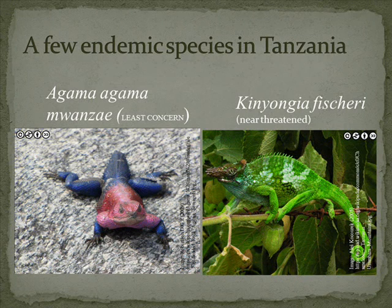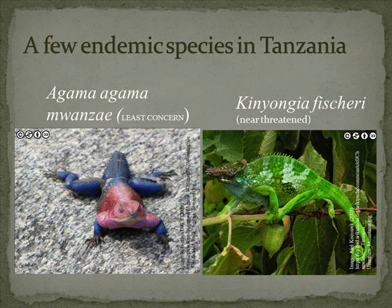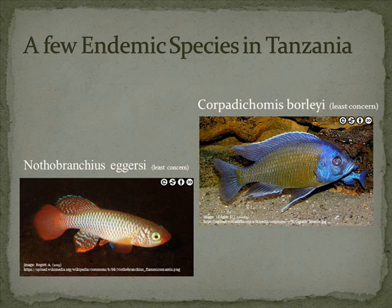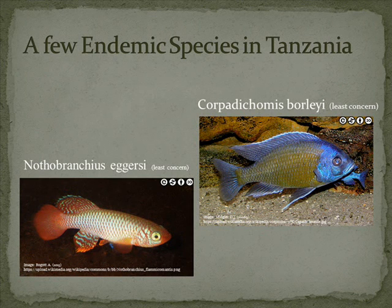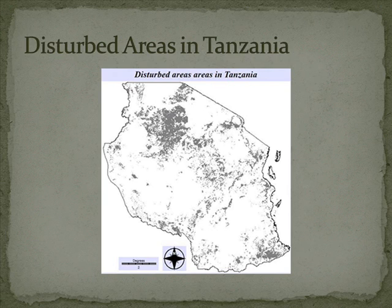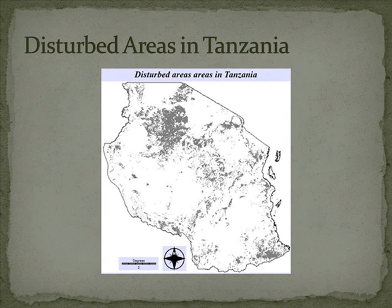The Kipunji is an endemic monkey that is critically endangered. Reptiles endemic to Tanzania include the flat-faced chameleon, which is not threatened, and the Kinyongia fisheri, which is also a chameleon. Since Tanzania is surrounded by lakes from all directions, 108 freshwater species are endemic to this country. Amphibians in Tanzania are diverse and come in all shapes and sizes.